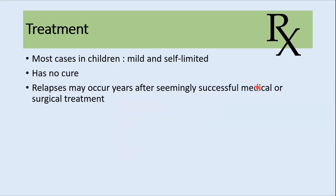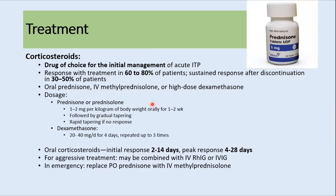Now let's move to treatment. In children, most cases are mild and self-limited. However, ITP has no cure, and relapses may occur years after seemingly successful medical or surgical treatment. Corticosteroids are the drug of choice for initial management of ITP. The response rate is around 60 to 80 percent, and about 30 to 50 percent of patients have a sustained response after discontinuation. Commonly used steroids include prednisolone, methylprednisolone, or high-dose dexamethasone. Prednisolone is usually given at 1 to 2 mg/kg for one to two weeks, followed by gradual tapering.